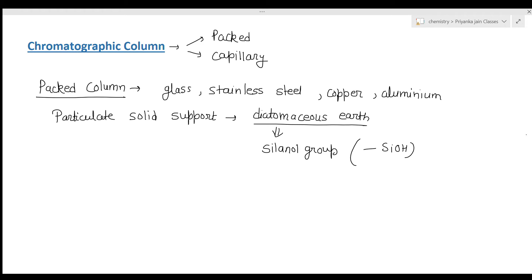In gas-liquid chromatography, sample particles get adsorbed on the silanol groups on the surface, and separation is based on partition of the solute between the mobile phase and the stationary phase. In gas-solid chromatography, adsorption on the surface takes place instead of partitioning.